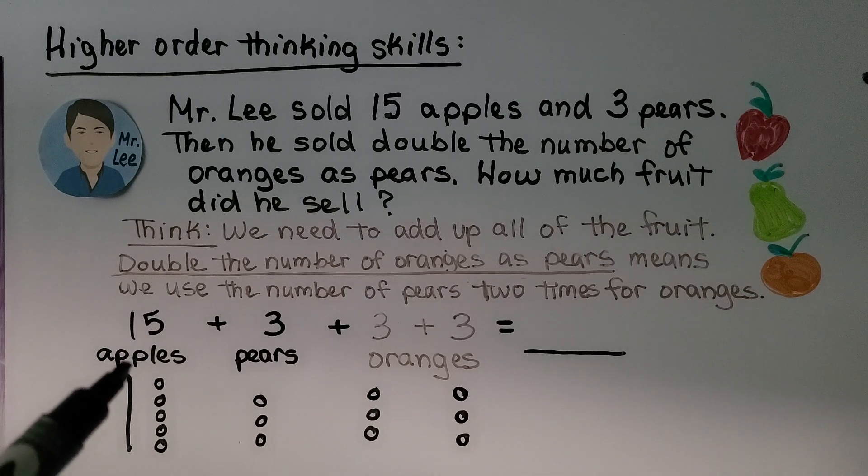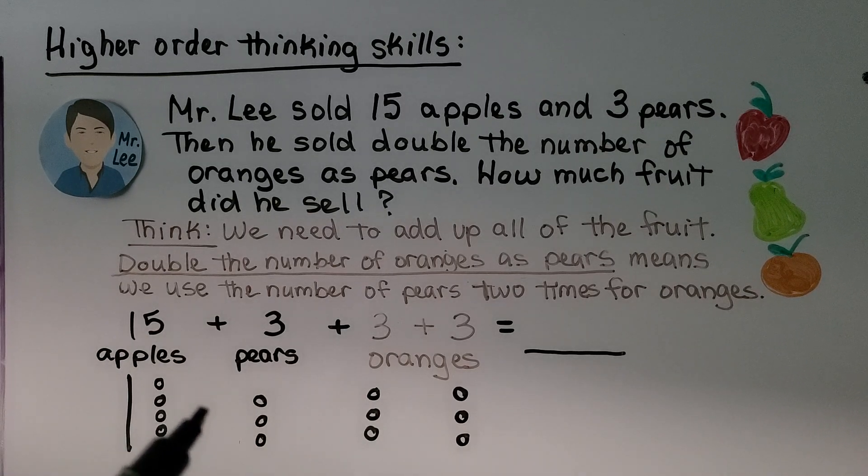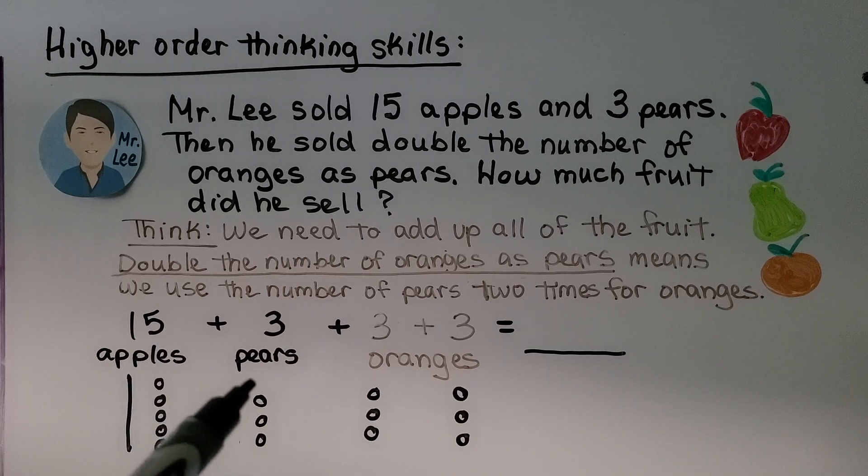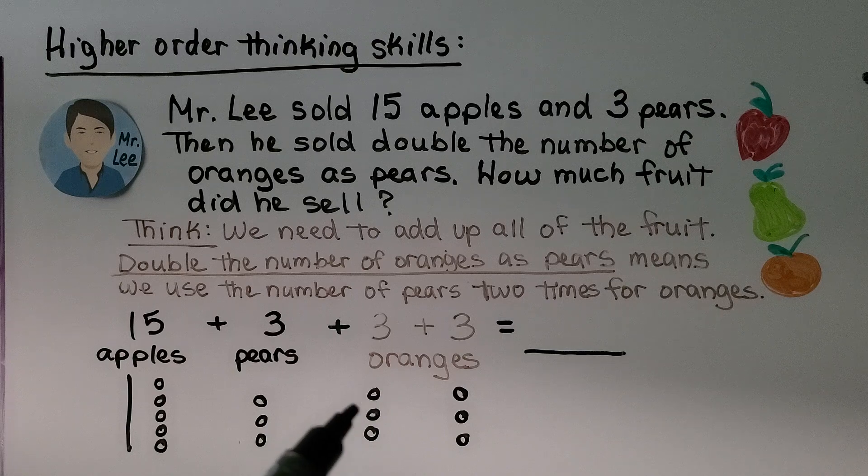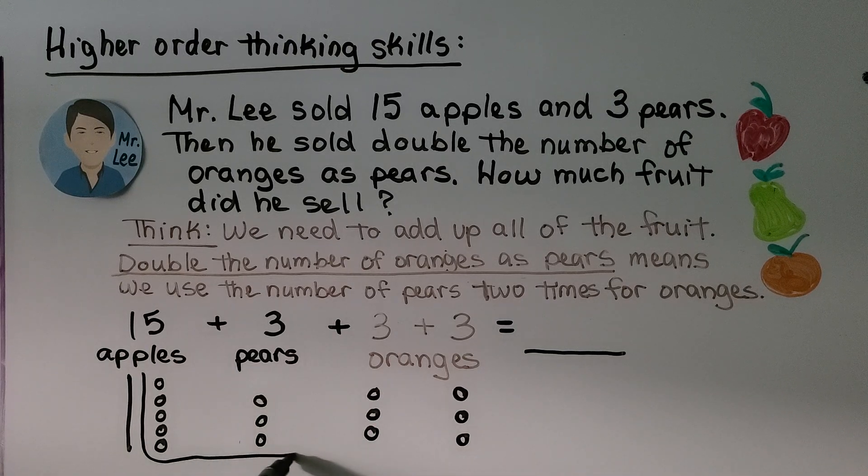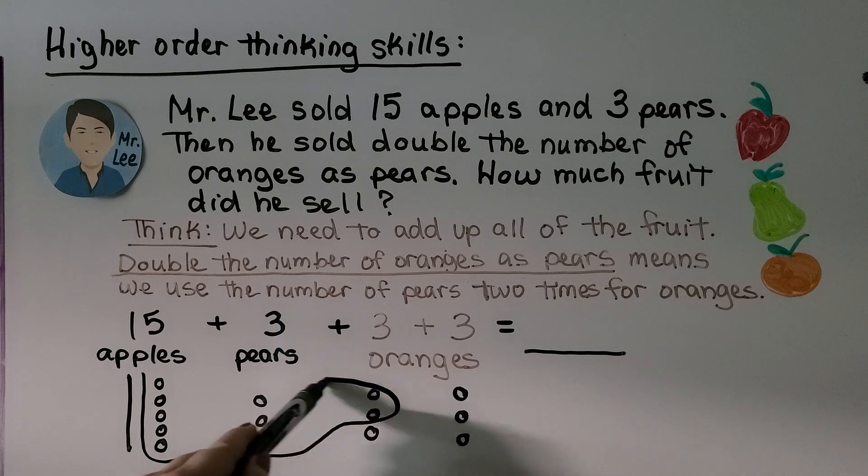We have 1 ten. Let's make some tens from these ones. We've got 5, 6, 7, 8, 9, 10. So if we circle these, we've made a ten.